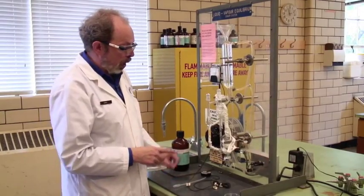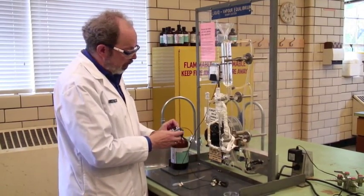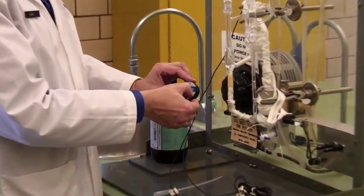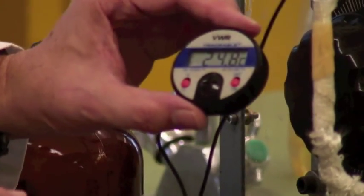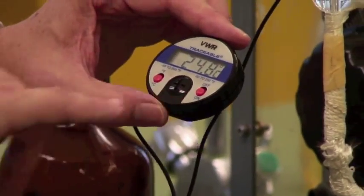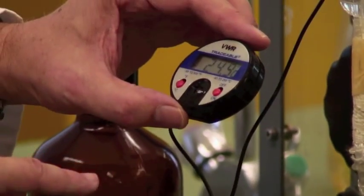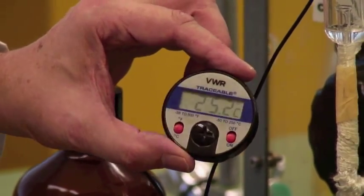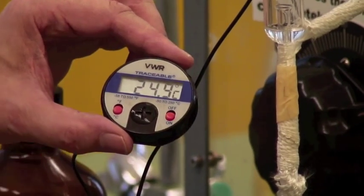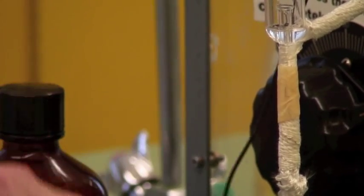Two other things while we're waiting for this to come up to temperature. We need, of course, to turn the thermometer on. And please, it's battery operated, so please remember to turn it off again when you're finished. At the moment, that's reading 24.9. I'm not sure if you can see that on camera or not. But it's certainly room temperature. Nothing's happening yet.